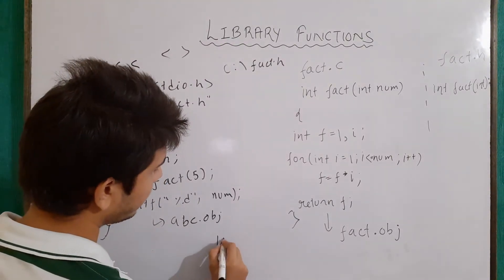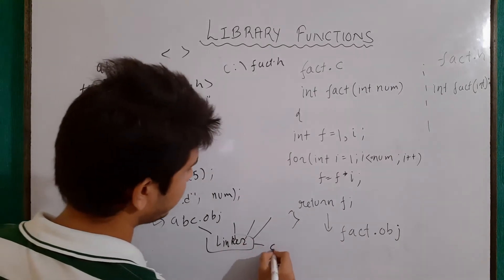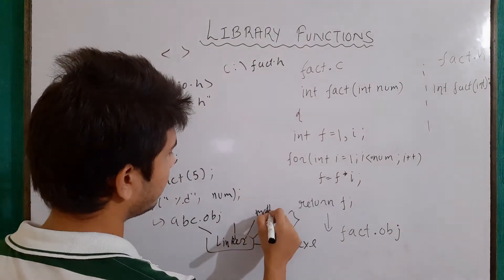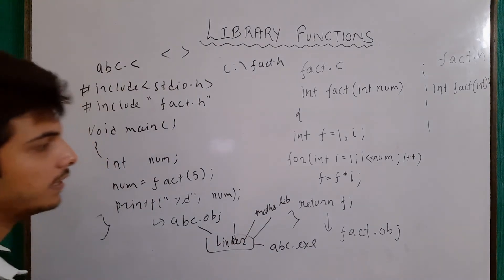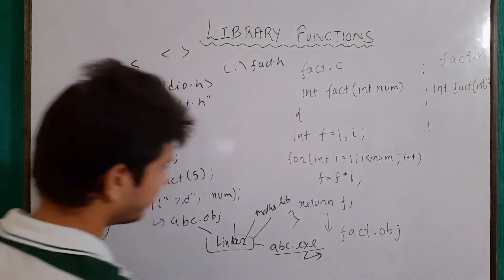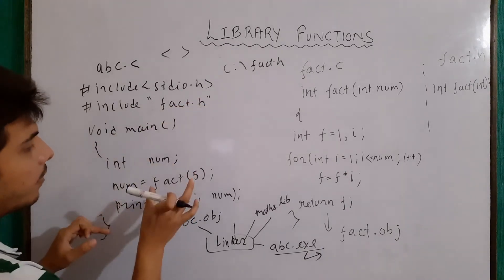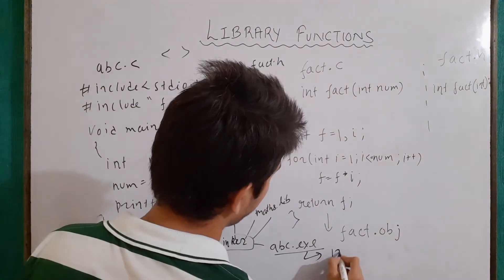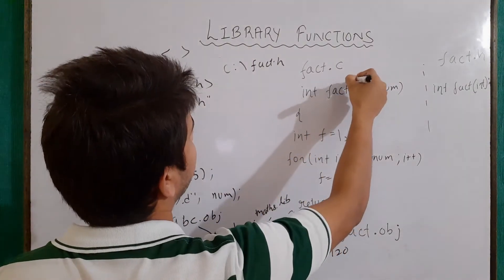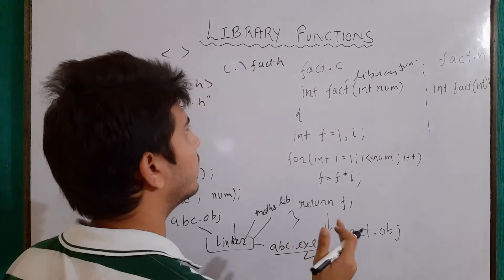After that, our linker will link all the library files and create an executable file. When linking, it will also link our maths.lib file, which has the definition of our fact function. Then we execute the program. At execution time we have the prototype, its calling, and its definition — and it will give us an output of 120 according to that line. So basically this function has now become a library function, because its definition resides in one of the libraries.